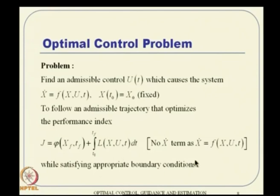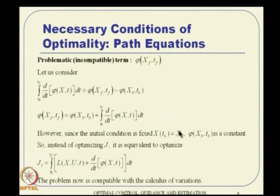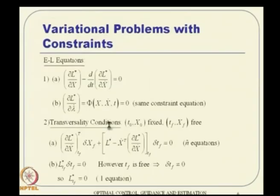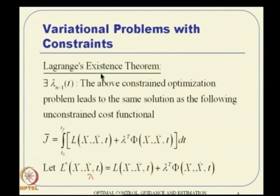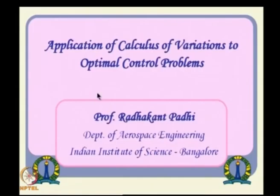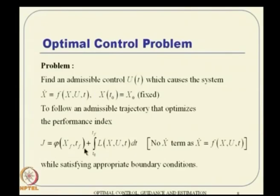This is the problem definition. The challenge here is that the calculus of variations setting we previously discussed did not contain any term outside the integral. But suddenly we are talking about a terminal cost term phi which is outside the integral. How do we handle that?